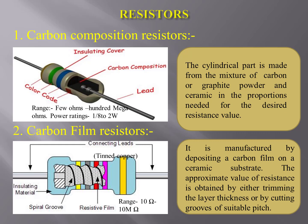It is available in a range from a few Ohms to 100 Megaohms, and its power rating is about 2 Watts. Carbon film resistors are manufactured by depositing a carbon film on a ceramic substrate. The approximate value of resistance is obtained by either trimming the layer thickness or by cutting grooves of suitable pitch.